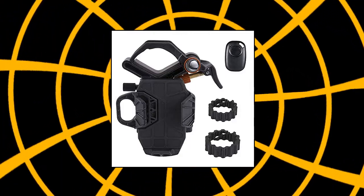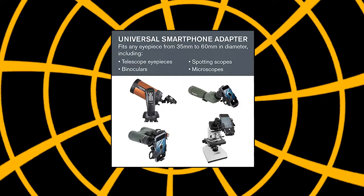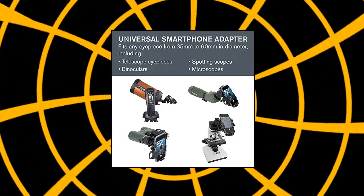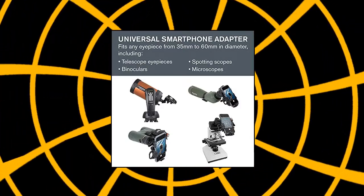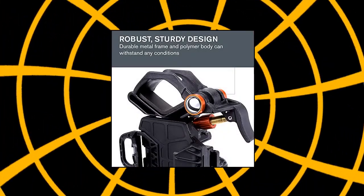Celestron Universal Smartphone Adapter - Patented design connects your smartphone to your telescope, spotting scope, binocular, monocular, and microscope so you can capture images and video through the eyepiece. Works with a wide range of mobile phones, including all the latest devices from Samsung,